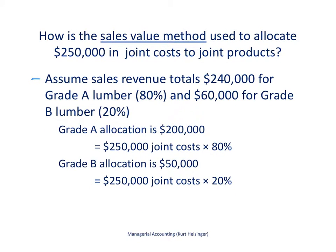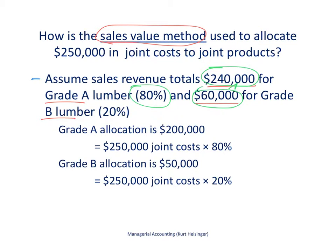Another approach to allocating joint costs is called the sales value method. The sales value method takes the sales revenue from each product — grade A lumber and grade B lumber — and uses that information to allocate joint costs. Let's assume the sales revenue from grade A lumber is $240,000 and the sales revenue from grade B lumber is $60,000. We take the revenue for each product divided by the total revenue of $300,000: $240,000 divided by $300,000 gives us 80%, and $60,000 divided by $300,000 gives us 20%.